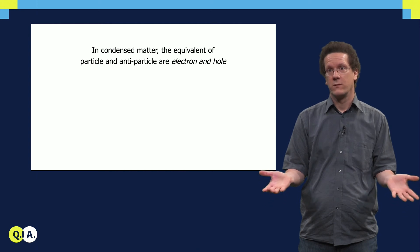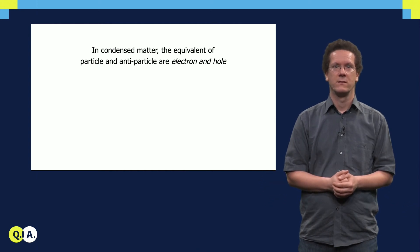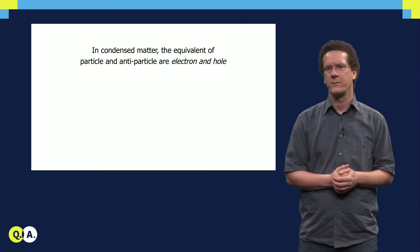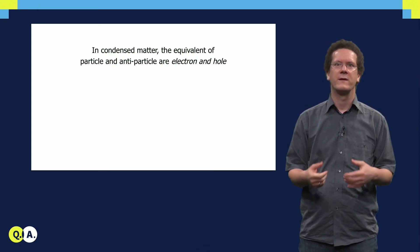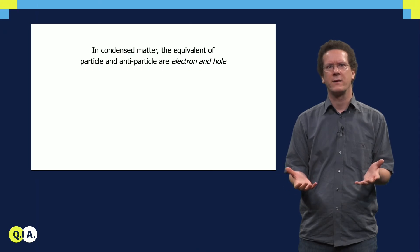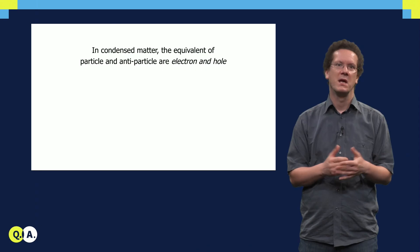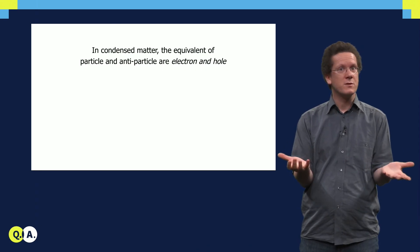Where should we look for Majoranas in condensed matter? We can again start from the concept of particle and antiparticle. As I told you before, the equivalent of particles and antiparticles in condensed matter are electrons and holes. A Majorana is a superposition of these two things.